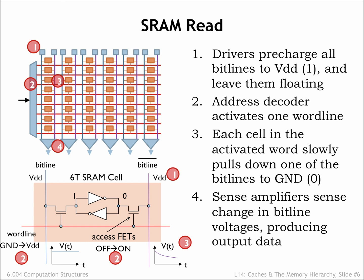Since detecting small changes in a voltage is very sensitive to electrical noise, the SRAM uses a pair of bit lines for each bit and a differential sense amplifier to provide greater noise immunity. As you can see, designing a low-latency SRAM involves a lot of expertise with the analog behavior of MOSFETs and some cleverness to ensure electrical noise will not interfere with the correct operation of the circuitry.